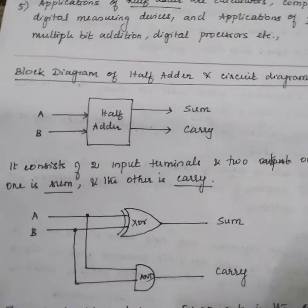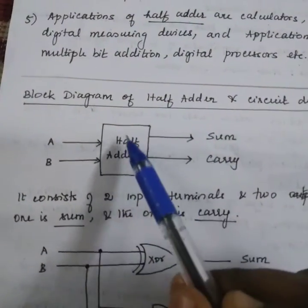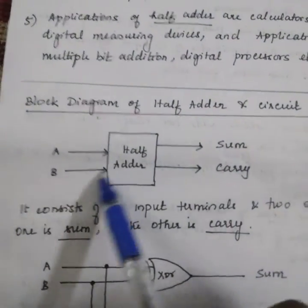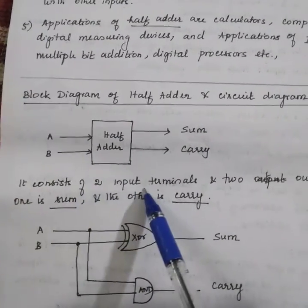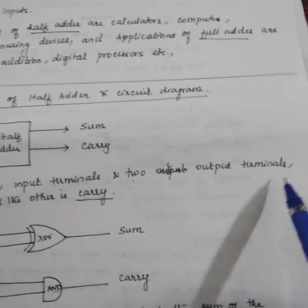Now let's see the block diagram of half adder. This is the block diagram: two inputs, two outputs - sum and carry. It consists of two input terminals and two output terminals.